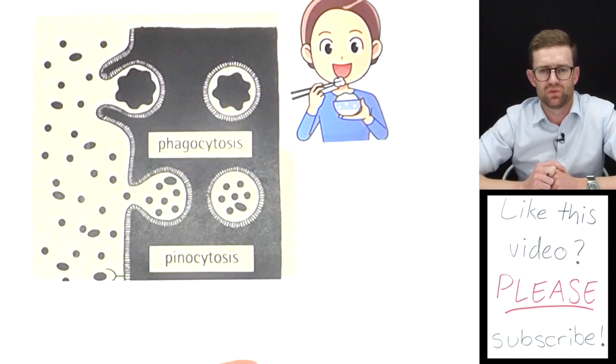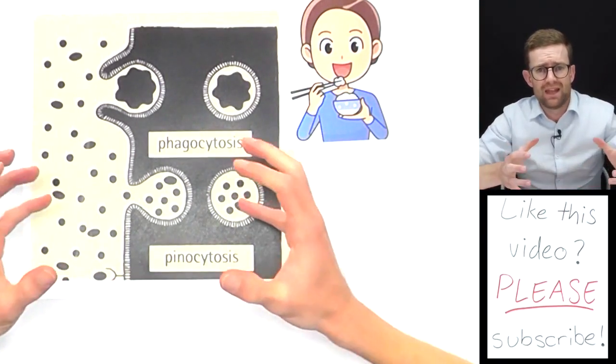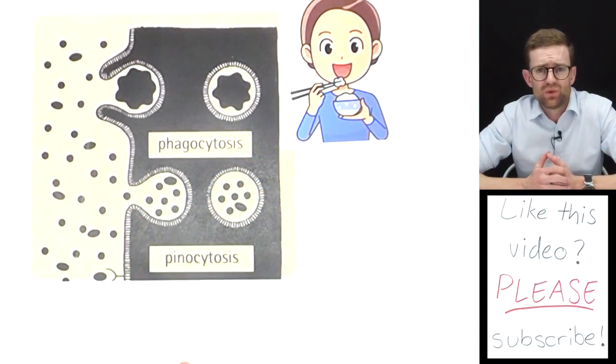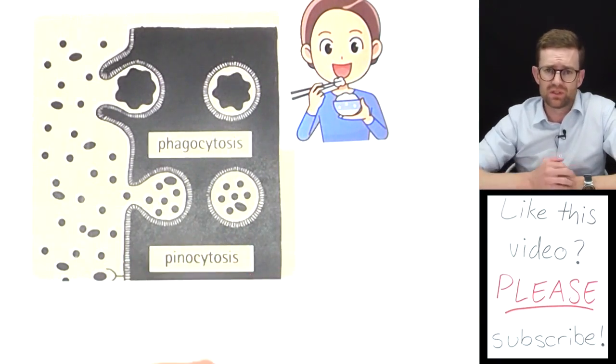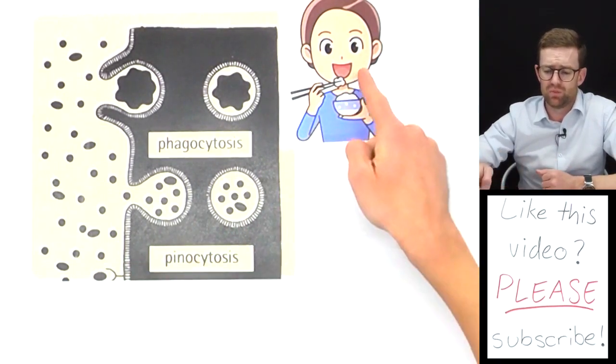And they end up in these tiny vesicles—obviously not to scale here, but just two diagrams to show you the difference between the two. An example of pinocytosis in action is the absorption of fat droplets into the cells that line our small intestine.